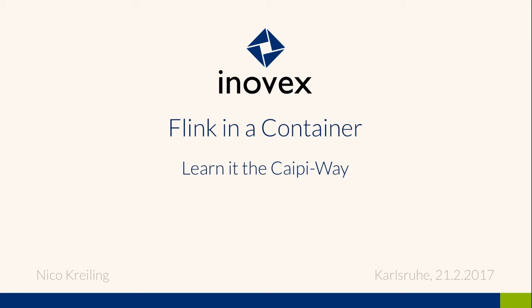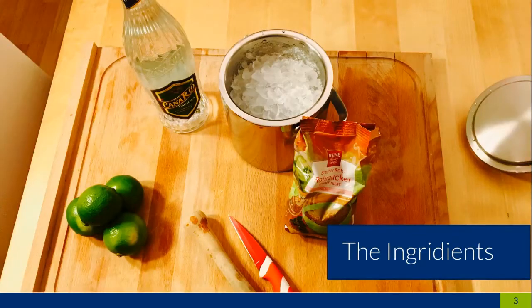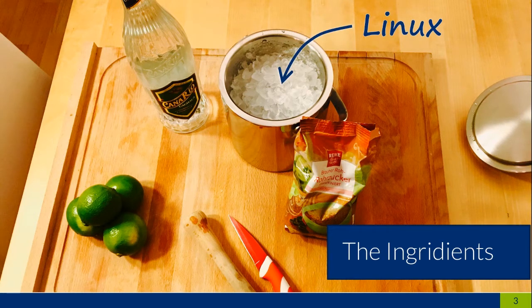I promised you some Caipirinha and sadly this wasn't about our drinking offer — it was like a comparison. Just assume for the beginning that a Caipirinha would be the same as Flink. So what do we need for a Caipirinha, or for Flink? We need different ingredients. Just as Flink as a Caipirinha — like almost every cocktail — is based on ice, most containers are also based on Linux. This is the basis of most Docker containers.